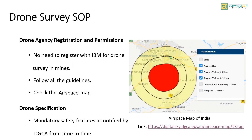There are some guidelines mentioned in the SOP. The first guideline is on drone agency registration and permissions. There is no need to register with IBM for drone survey in mines. Drone agencies or the lessee can conduct the survey while following all the applicable rules, regulations, and guidelines notified by DGCA. Before flying, check the airspace map from the digital sky website. The drone airspace map is an interactive map of India that demarcates the red, yellow, and green zones across the country. Drones can be operated in yellow and red zones only after permission from DGCA.